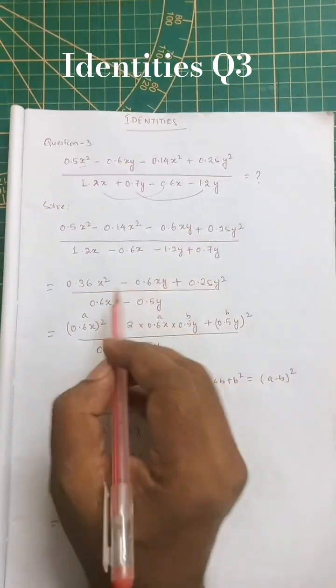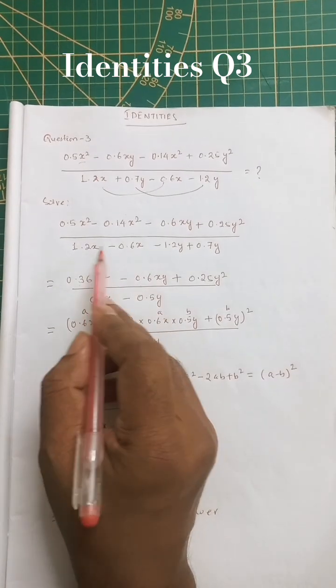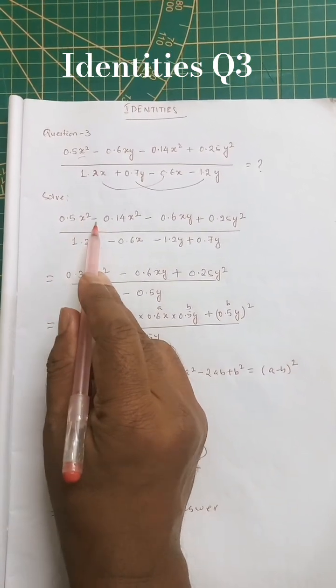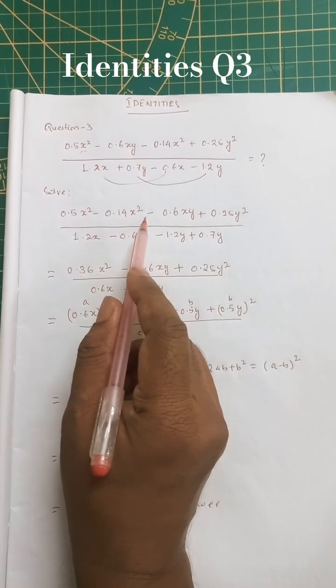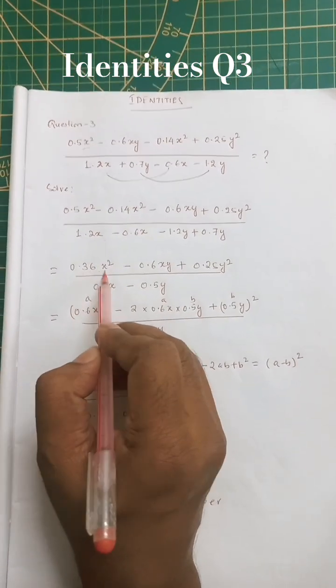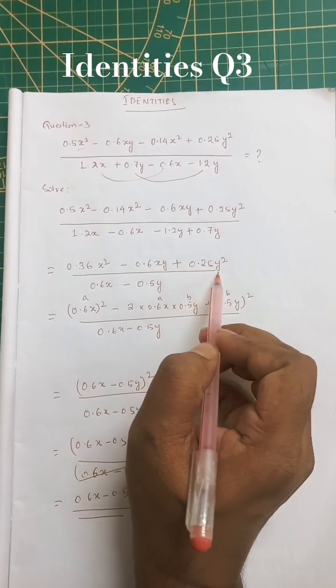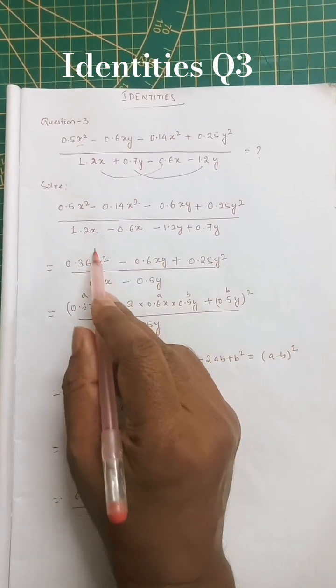After doing that, I solved 0.5 x squared minus 0.14 x squared, which equals 0.3 x squared minus 0.6 x y plus 0.25 y squared. Below it is 1.2 x minus 0.6 x, which is 0.6 x minus 1.2 y plus 0.7 y.